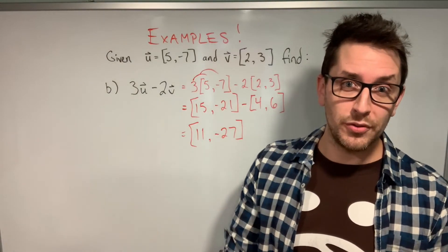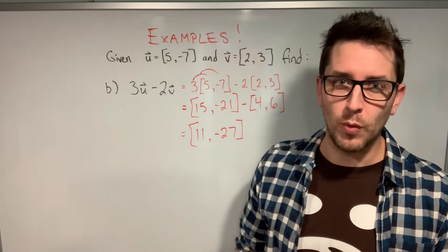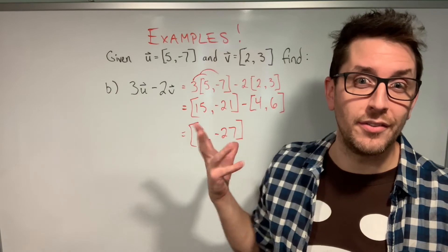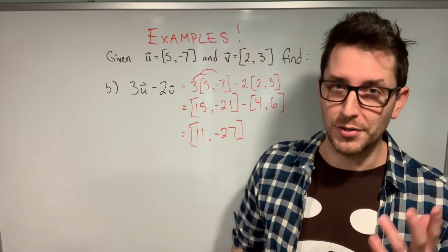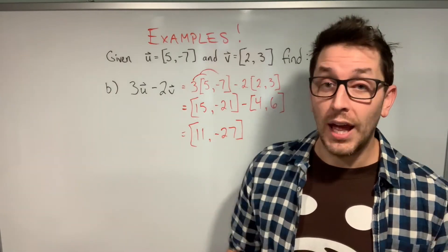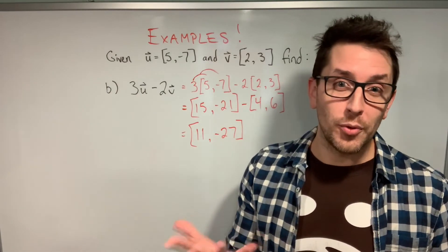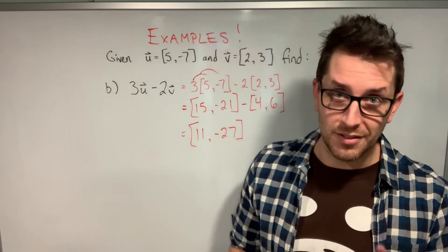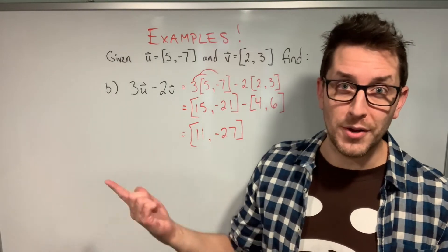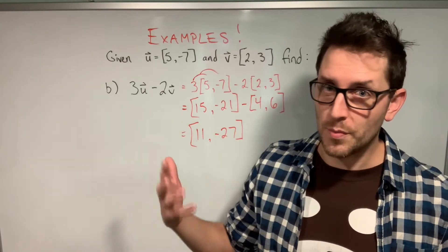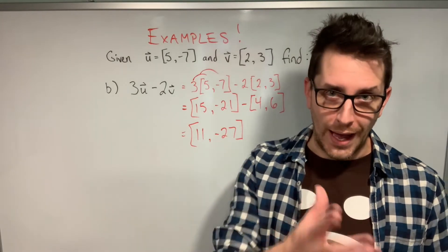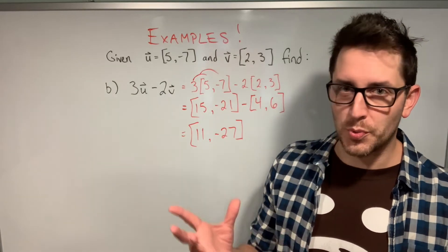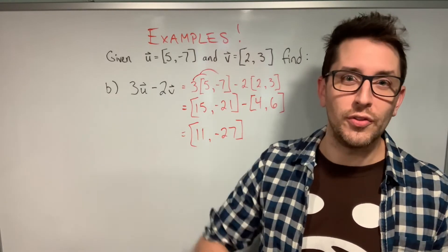I hope these examples give you an idea of what's possible when adding and subtracting Cartesian vectors, and that you were able to make connections to adding and subtracting vectors geometrically. Just remember that when you add or subtract two vectors, you're really just producing a resultant vector.